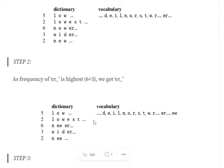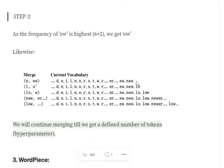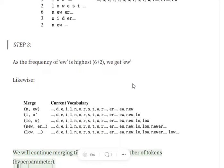Similarly, after merging R-underscore, the next highest frequency token pair was E plus R-underscore together, that is six plus three. So we merged ER-underscore and considered it as a new token. We keep merging tokens one by one, and whichever pair has the highest frequency gets added to the token vocabulary.